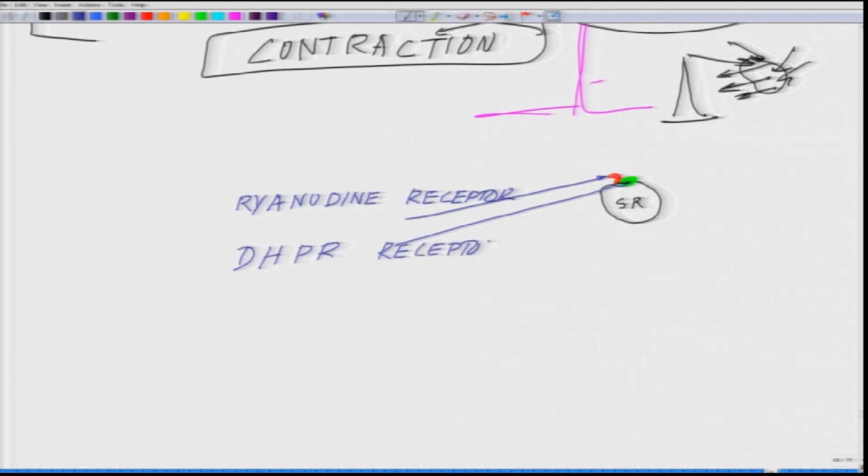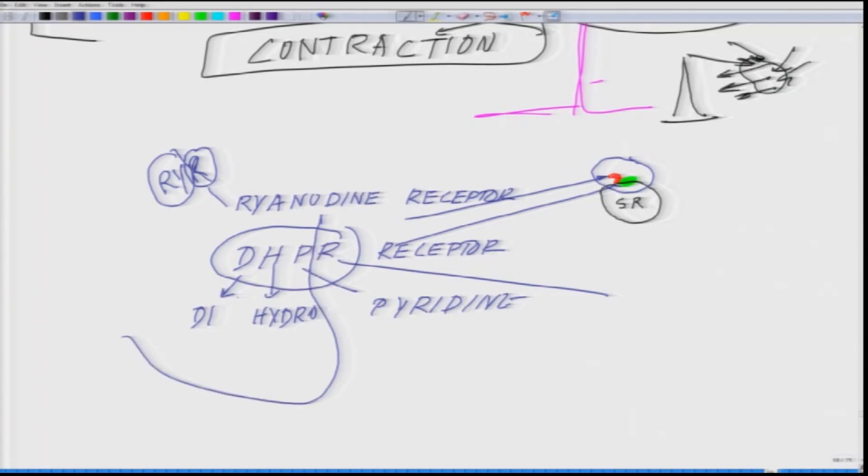The other one is called DHPR receptor. These are calcium channels. D stands for di, H stands for hydro, P stands for pyridine, R stands for receptor. A sarcoplasmic reticulum essentially has two different sensors: ryanodine (RYR) and dihydropyridine receptors (DHPR).